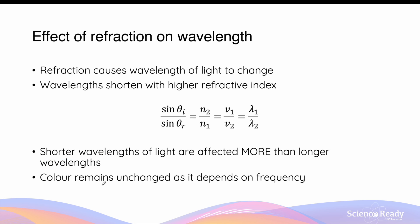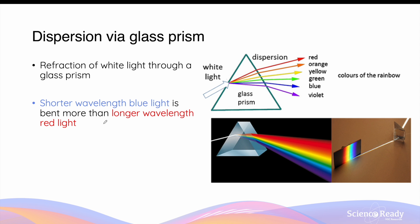Even though the actual wavelength of visible light changes, its color remains unchanged, because frequency is what dictates the color we perceive rather than wavelength. So even though the wavelength changes, when the frequency remains constant the color of each component during dispersion still remains the same.